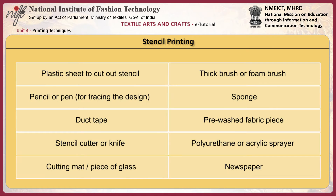The tools used for stencil printing are a plastic sheet to cut out the stencil, pencil or pen for tracing the design, duct tape, stencil cutter or knife, cutting mat or piece of glass, thick brush or foam brush, sponge, pre-washed fabric piece, polyurethane or acrylic sprayer and newspapers.